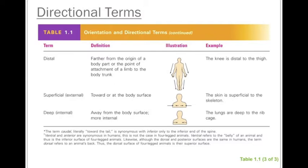The last two terms are 'superficial' and 'deep.' Superficial means toward the body surface or shallow — toward the external surface of the body. Deep means toward the internal surface of the body. For example, skin is superficial to the skeleton because the skeleton is deeper than the skin.